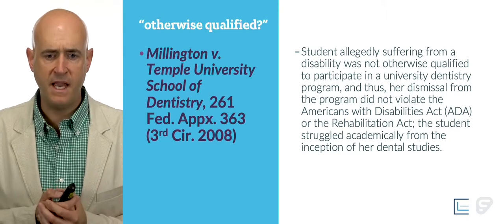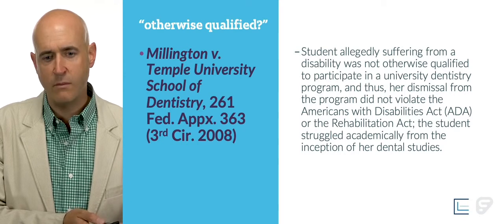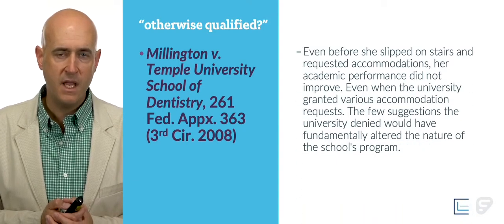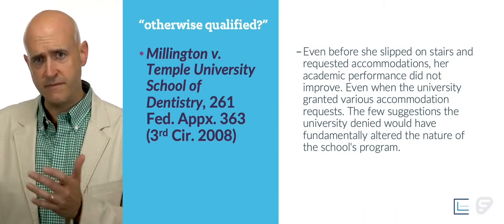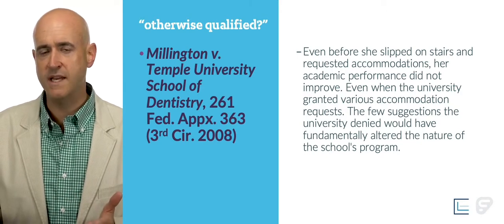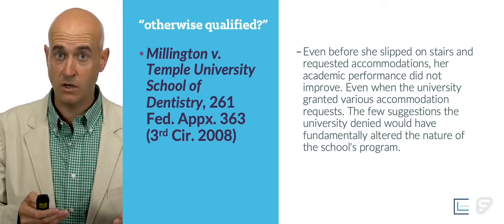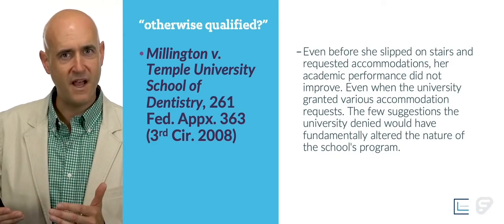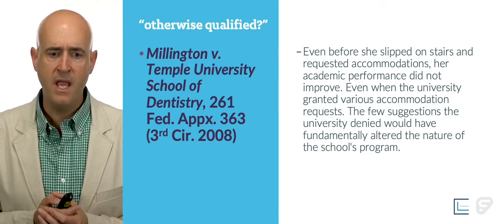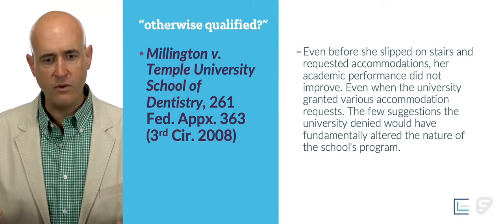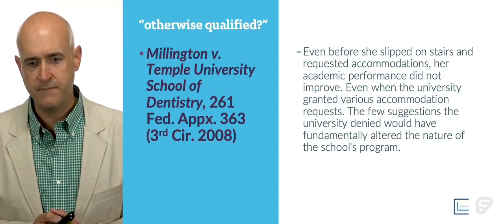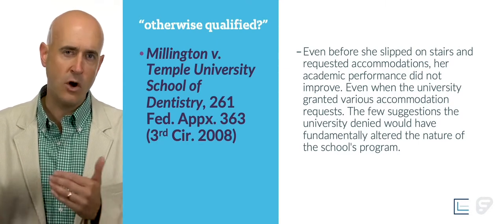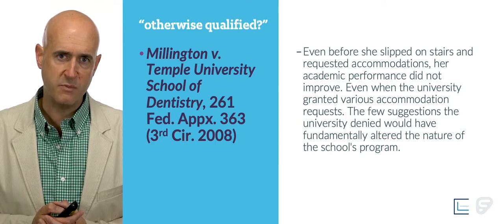Her dismissal didn't violate the ADA or the Rehabilitation Act because of her performance. The student struggled academically from the inception of her studies — even before she had a physical manifestation in school. Before she requested accommodation, it was fairly clear she was not able to perform at the level expected. She was not otherwise qualified to complete the essential tasks or the curriculum. Her academic performance didn't improve even when the university granted various accommodation requests. The few suggestions the university denied, the court concluded, would have fundamentally altered the nature of the school's program.